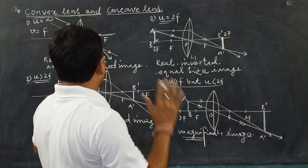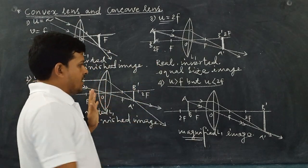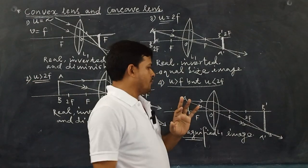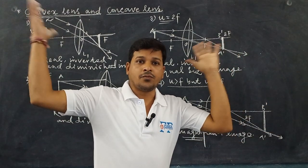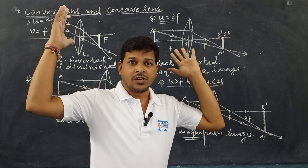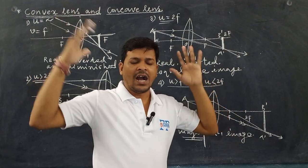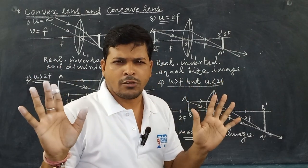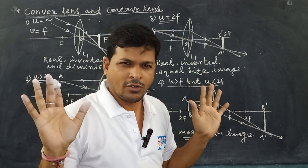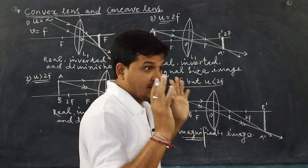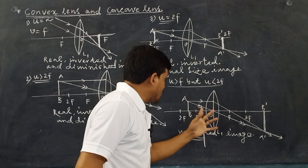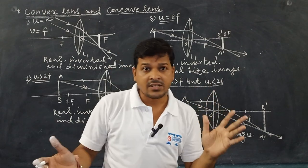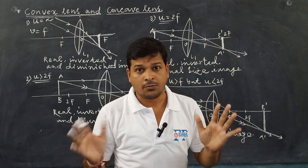Another diagram shows that if the object is at F, the image will be formed at infinity — a highly magnified image will be formed. That is not necessary for our board exam. The last and most important case: if the object is placed in between F and O — between the optical center and the principal focus.